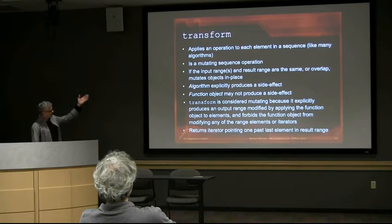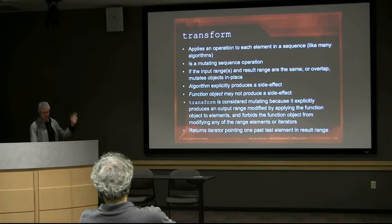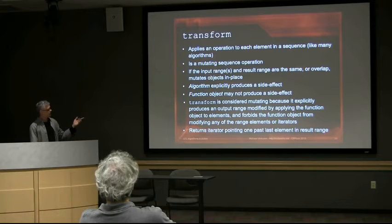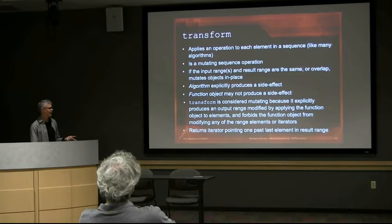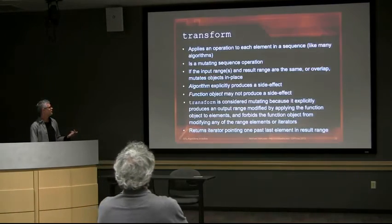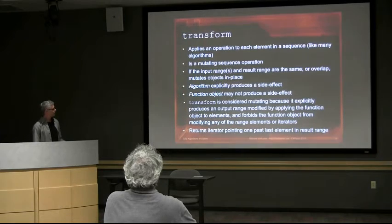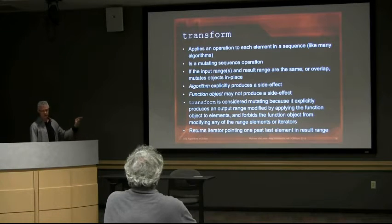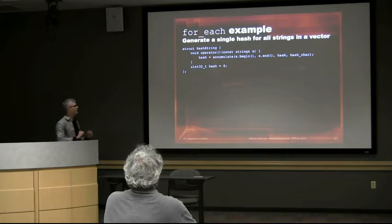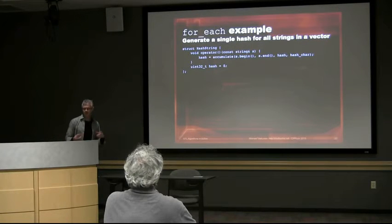Transform, on the other hand, is a mutating operation. It does many of the same things, and if the input and output ranges overlap it can do things in place. The algorithm produces the side effect — the function object shouldn't do that. It's considered mutating because it exclusively produces an output range by applying the function to modify the result range. It returns an iterator pointing one past the last element in the result range.